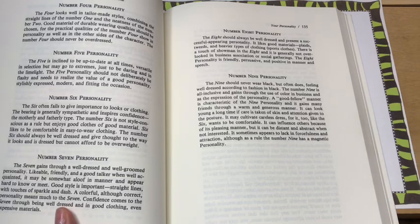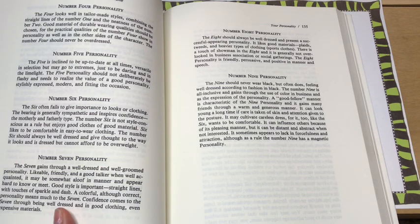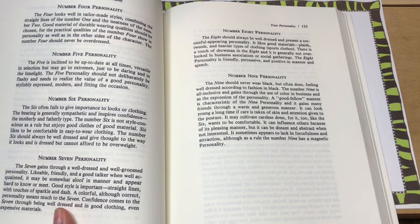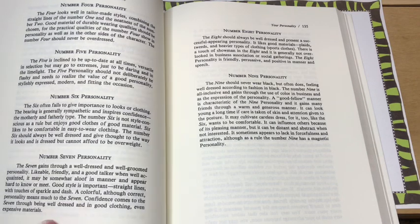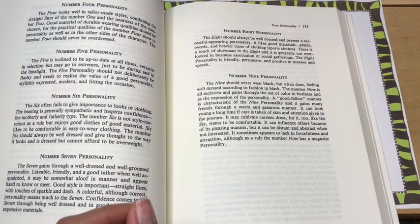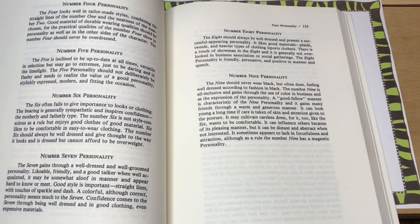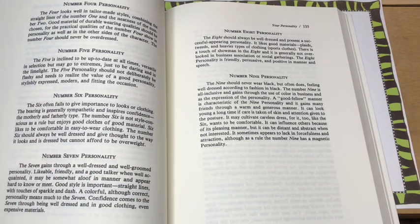Going into a 4 personality, looks well in tailor-made styles, loves the straight lines of the one and the neatness of the two. Good material of durable wearing quality should be chosen. Number 4 should never be overdressed. And number 5 personality is inclined to be up to date at all times, versatile in selection, but may go to extremes just to be daring and in the limelight. Maybe loves to have a be in the center of attention, likes to be in the know.